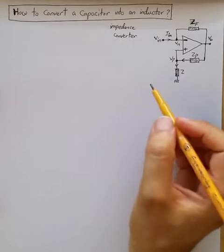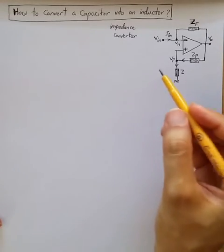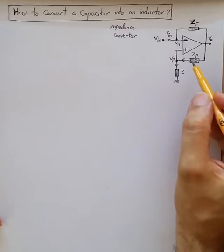How to convert a capacitor into an inductor. We use an impedance converter circuit shown here based on one op-amp.